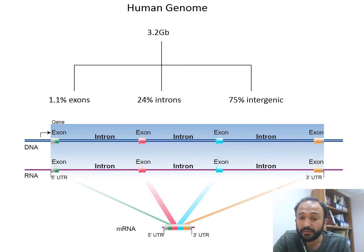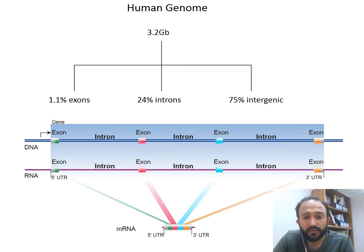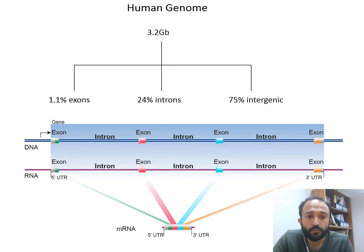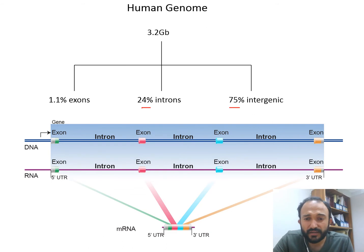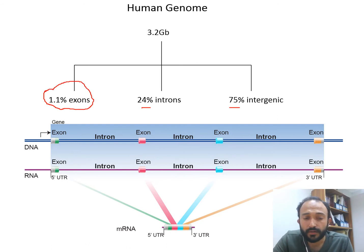It is very interesting that after sequencing the whole human genome — which is 3.2 billion base pairs in size — scientists found that out of 100% of the genome, only 1.1% were exons, 24% were introns, and just over 75% was intergenic region. Scientists were very confused that only 1.1% of the genome was actually the protein-coding part.